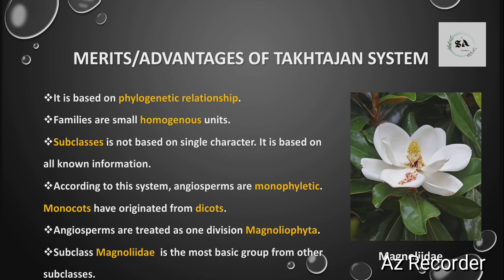Merits/advantages of Takhtajan's system: first, it is based on phylogenetic relationships. Second, families are treated as small homogeneous units. Third, subclasses are not based on a single character but on all available information. Fourth, according to this system, angiosperms are monophyletic — meaning they have a single common ancestor — and monocots originated from dicots. Fifth, angiosperms are treated as a division called Magnoliophyta. Sixth, subclass Magnoliidae is the most basic group compared to other subclasses.